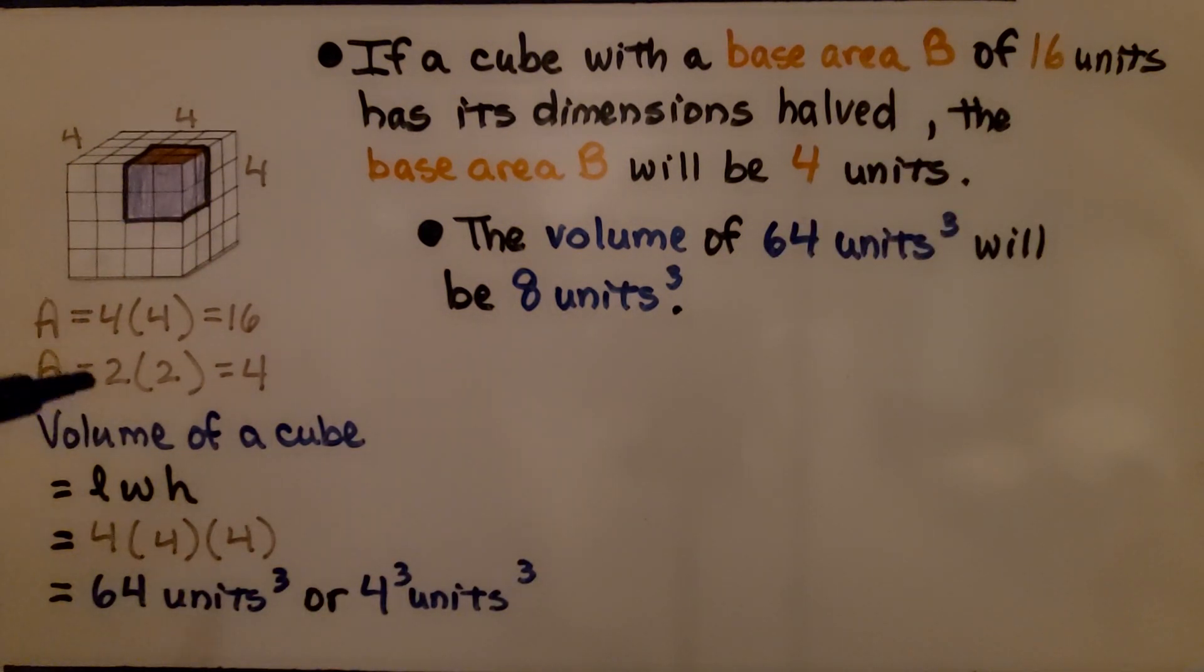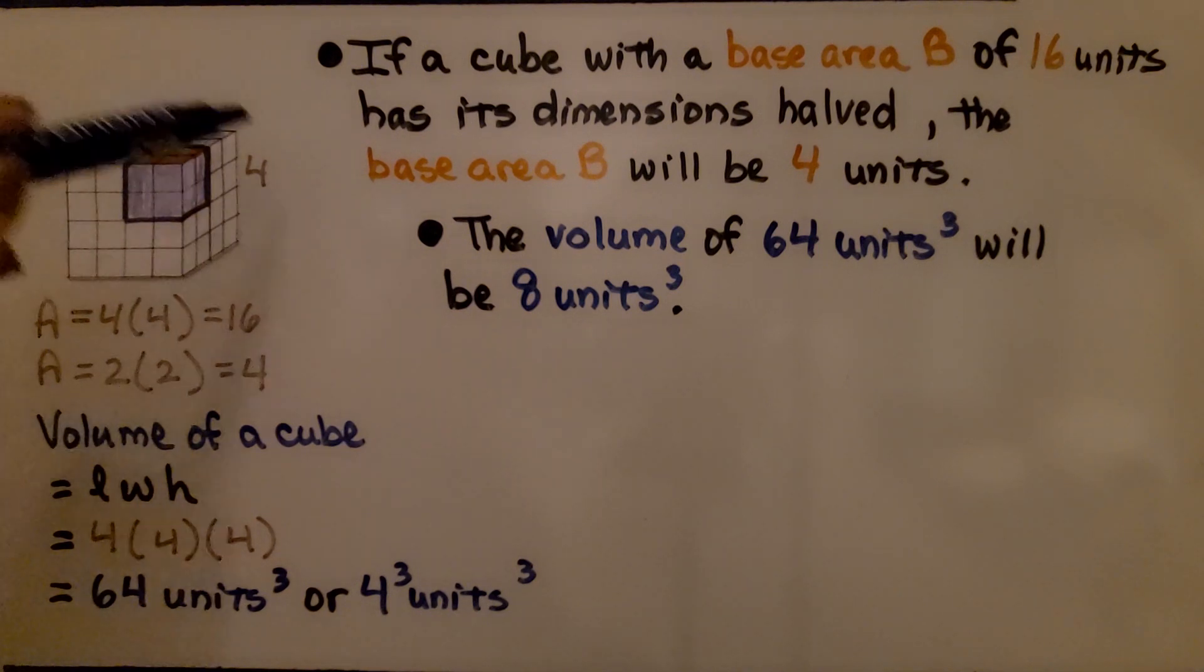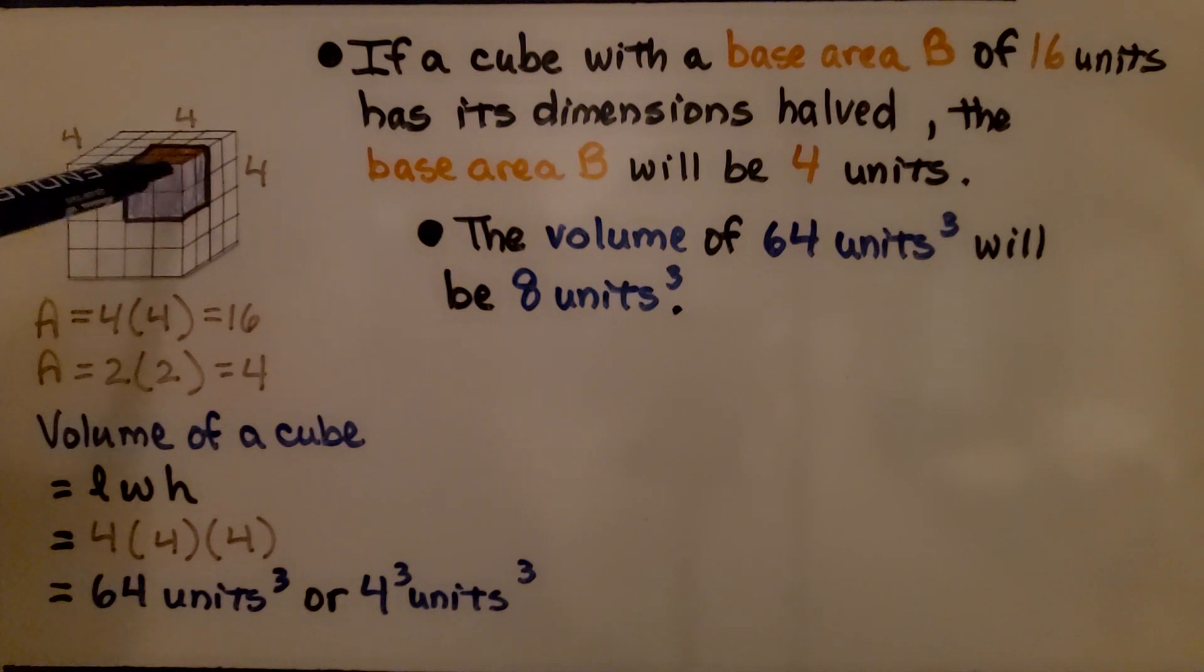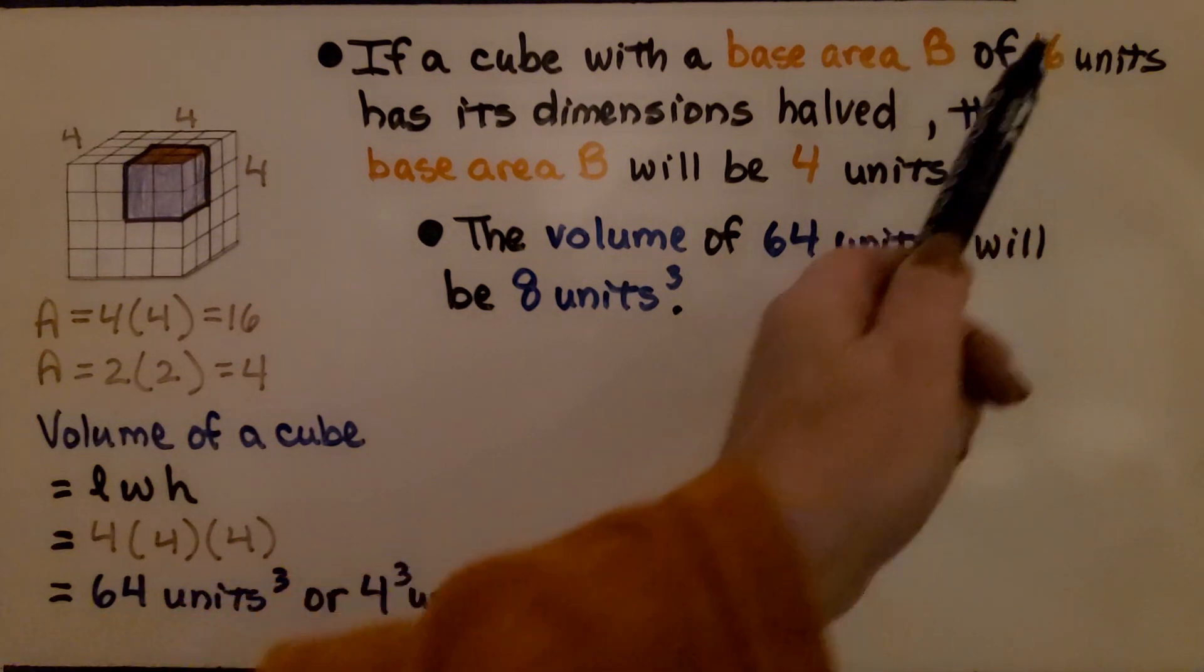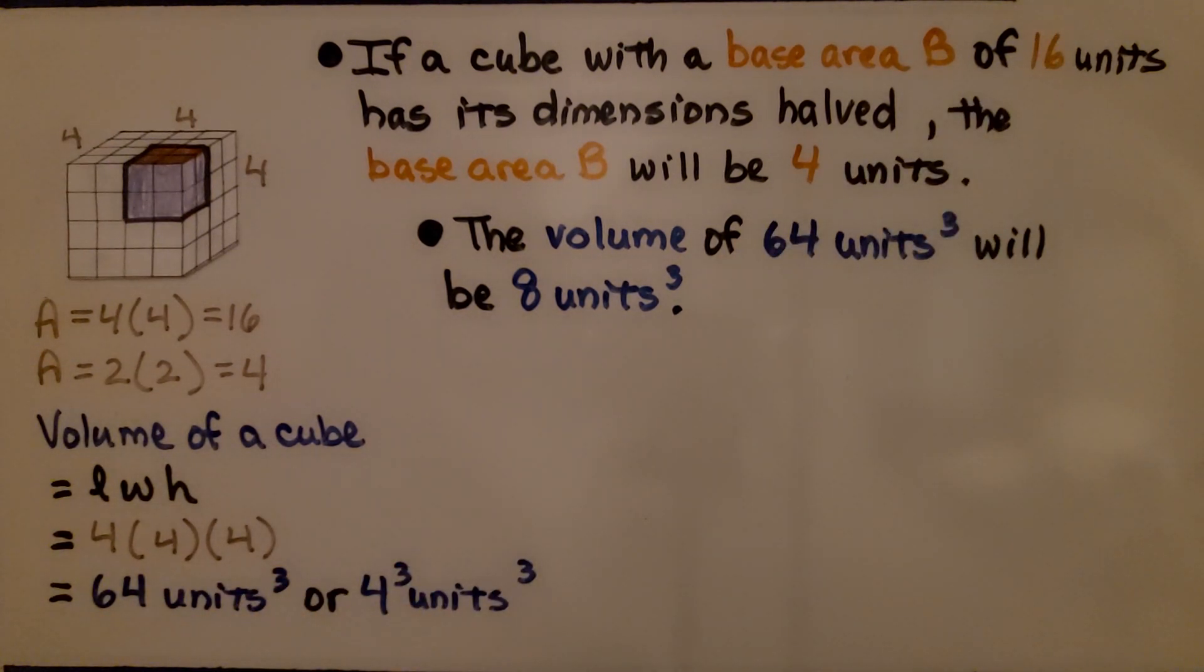If a cube with a base area of 16 units has its dimensions halved to 2 units—instead of 4 × 4 × 4, it's 2 × 2 × 2—the base area becomes 4 units. We cut the dimensions in half from 4 to 2, and the base area went from 16 down to 4.